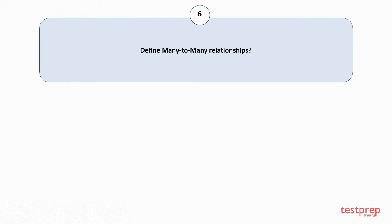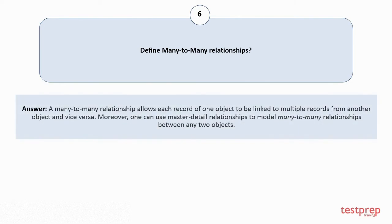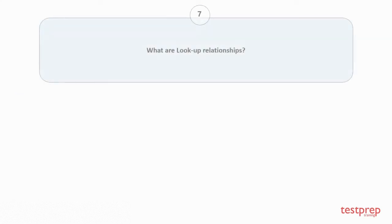Question number six: Define many-to-many relationships. A many-to-many relationship allows each record of one object to be linked to multiple records from another object and vice versa. Moreover, one can use master-detail relationships to model many-to-many relationships between any two objects.